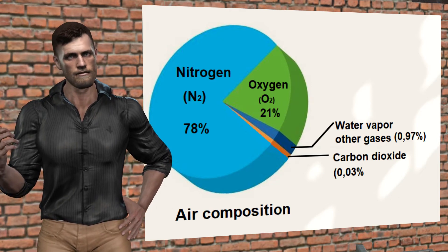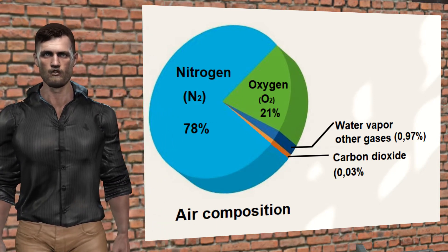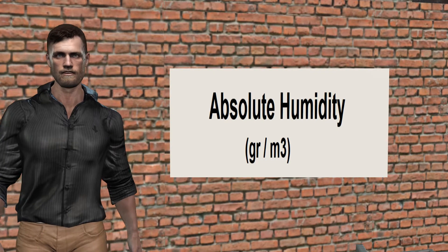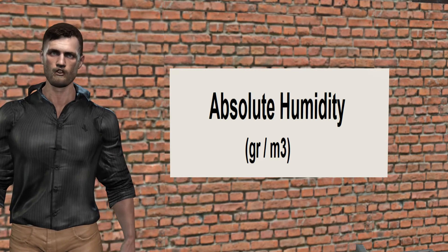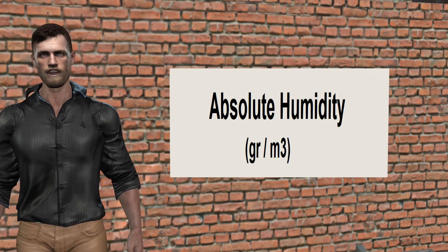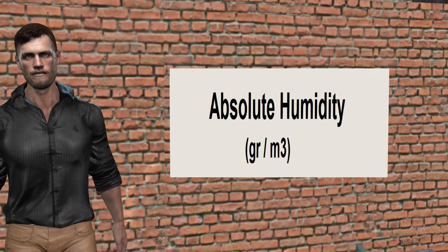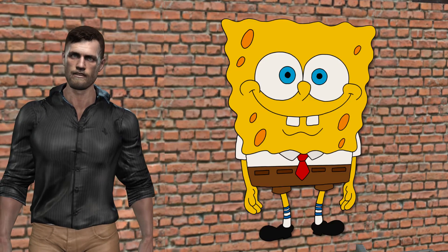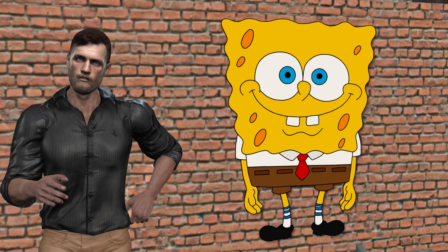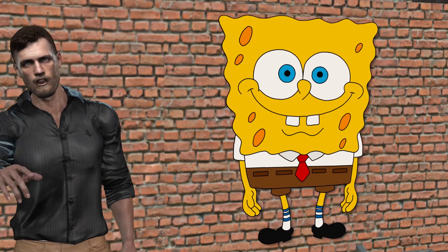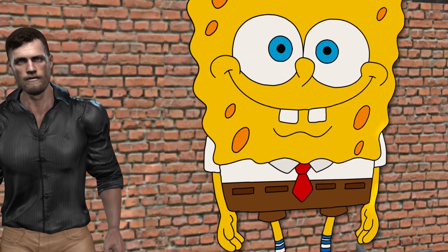Since air can contain water vapor, we can talk about the concept of humidity, and specifically, we can define absolute humidity as the concentration of water vapor in the air, expressed in grams per cubic meter. This amount can vary from values close to 0 to up to 40 grams per cubic meter in tropical areas, although there is normally no more than 12 grams per cubic meter. We can consider air as a kind of sponge, which absorbs more or less water depending on the pressure and temperature. The higher the temperature, the greater the amount of water vapor that the air can hold per cubic meter.